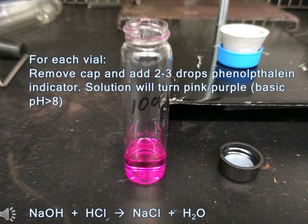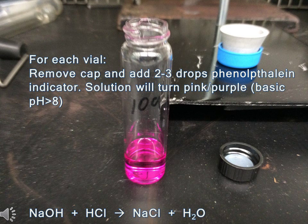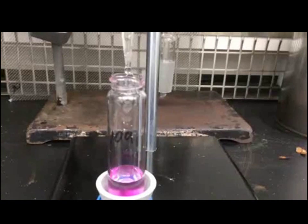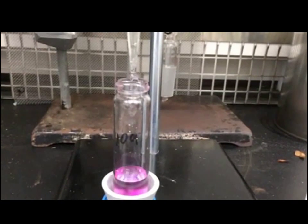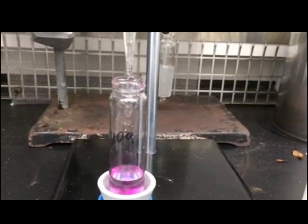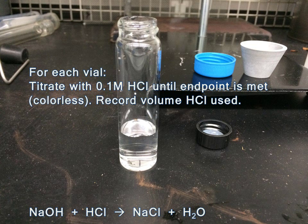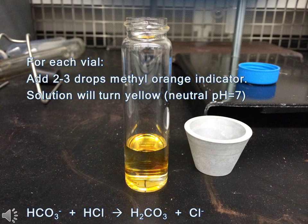To each CO2 trap vial, remove the cap and add 2 to 3 drops of phenolphthalein indicator. Then begin titrating with 0.1 molar HCl solution until the first endpoint is met. You should see the solution go from pink to colorless. Record the volume of HCl solution used inside the burette. Now that the first endpoint has been reached.